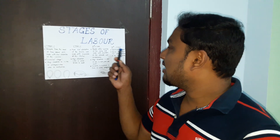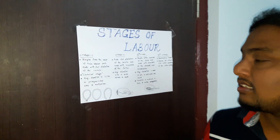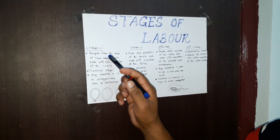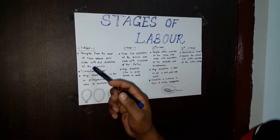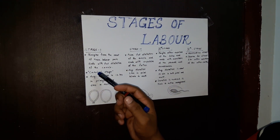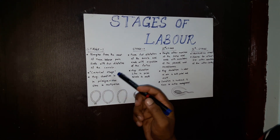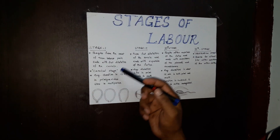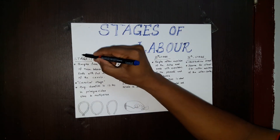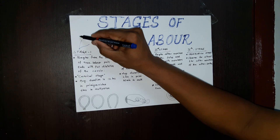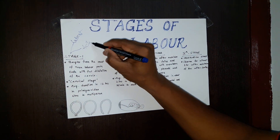There are four stages in labour. Stage 1 begins from the onset of true labour pain and ends with the full dilatation of the cervix. This stage is also called the cervical stage because ripening of the cervix takes place. In this stage, there are two phases: latent phase and active phase.